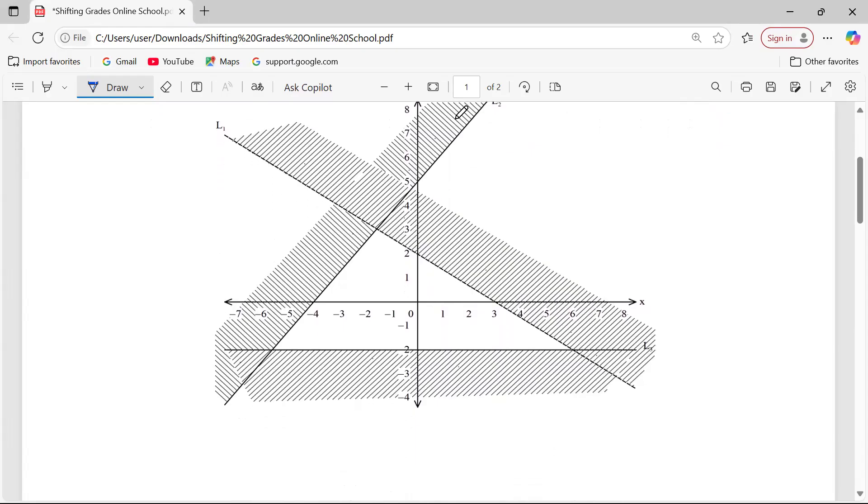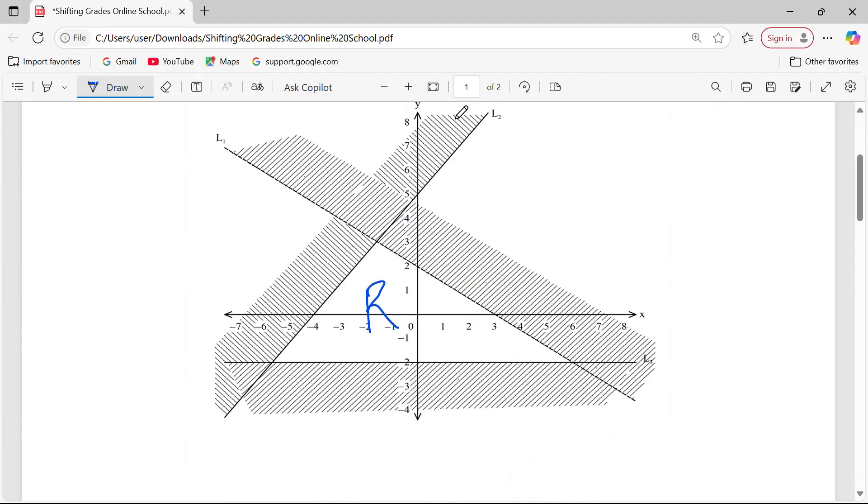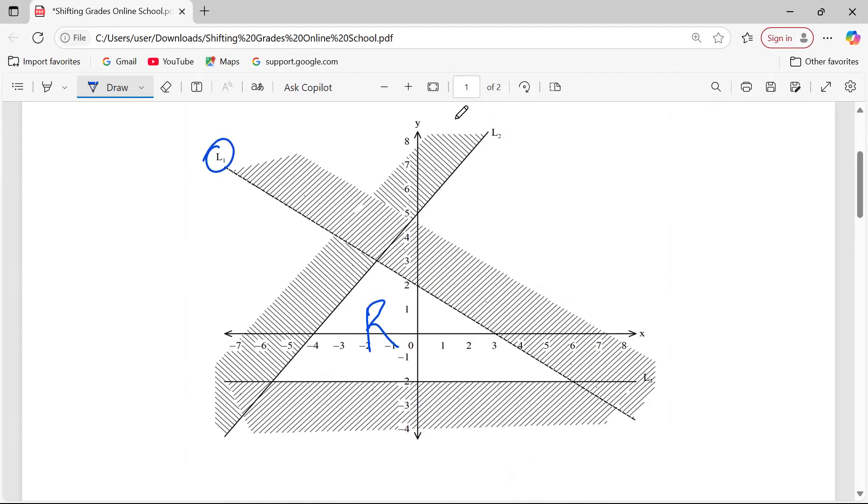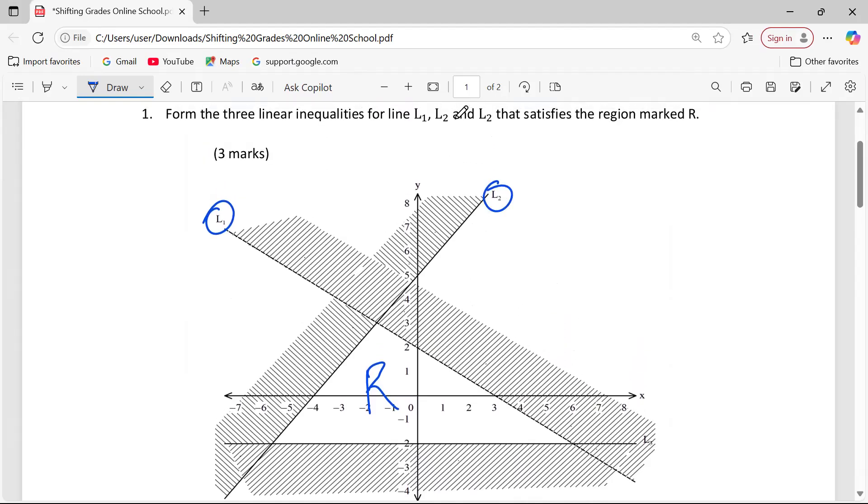Therefore, we got a region here which is marked R, the unshaded part. This region has been bordered by three lines: L1, L2, and L3. You can see L1 is here, L2, then L3 that way.